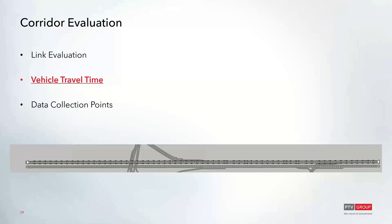Next on the corridor evaluation list are vehicle travel times. These have both a start point, shown in light pink, and an end point in light green, and these can be placed along any roadway in the network. For a vehicle to be included in that travel time data, it must travel over both the start point and the end point. For example, if a vehicle hits the first point but then turns and never reaches the end point location, that vehicle would not be included.